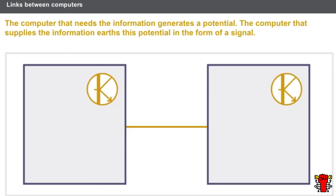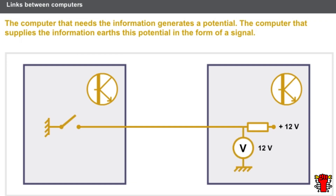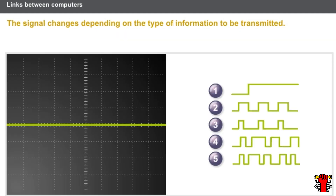In a link between computers, the computer that needs information generates a potential. The computer that supplies the information earths this potential in the form of a signal. The computer that needs the information measures the voltage on the wire and deduces the signal from it. Communication is one way, and various signals are used. The signal changes depending on the type of information to be transmitted.